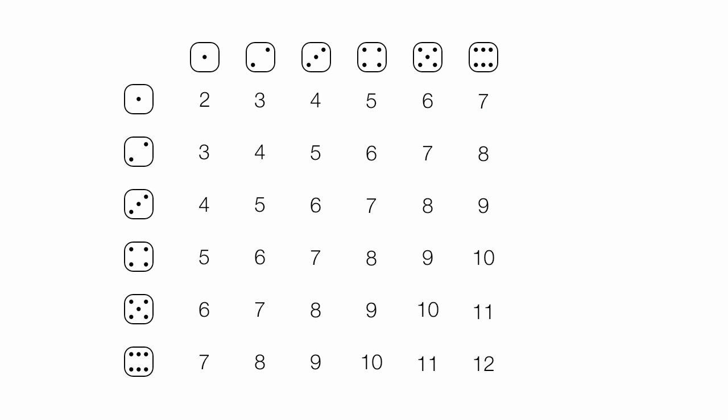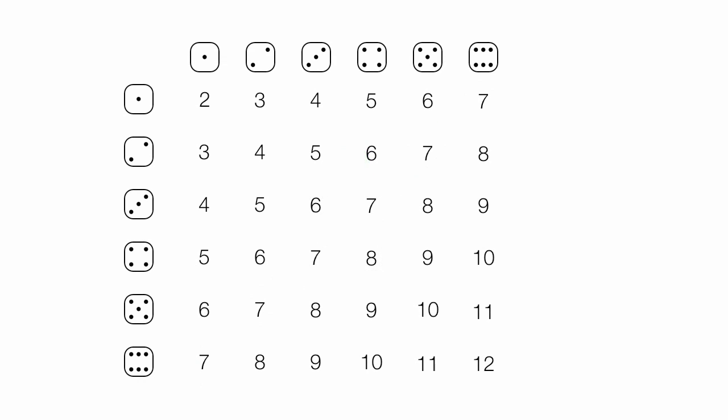If I add up all the possible 7s that can happen, there's 1, 2, 3, 4, 5, 6. Six 7s. So I have 6 out of 36 possibilities. That's 6 out of 36.